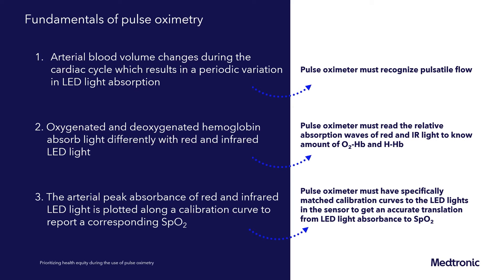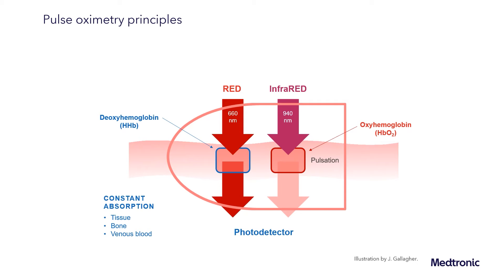This diagram illustrates the basic function of a transmittance pulse oximeter sensor with two wavelengths of light, red and infrared, passing through the tissue bed to be detected by the photodetector on the other side. Through the sensor is the pulsation of arterial blood, which expands and contracts with each pulsation, allowing the sensor to detect the change in light absorption and calculating the plethysmography or pulse waveform.